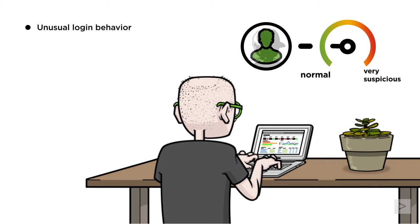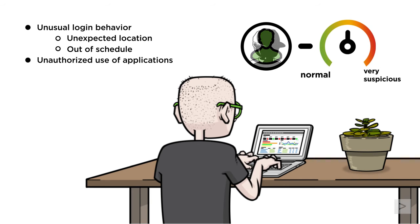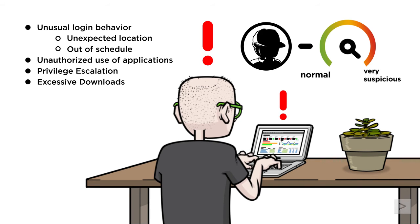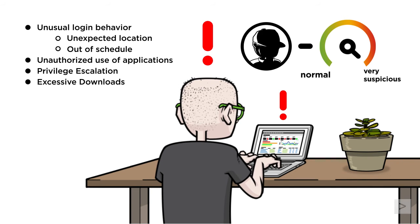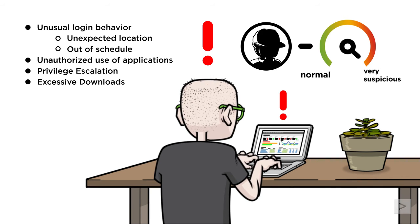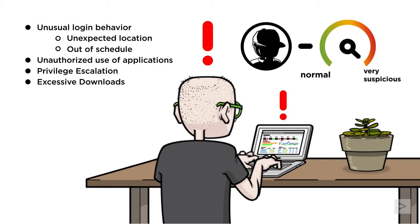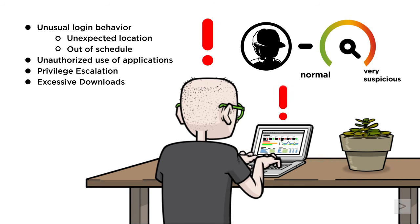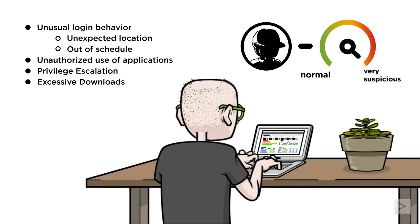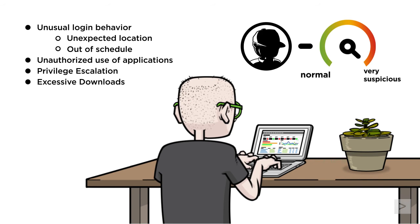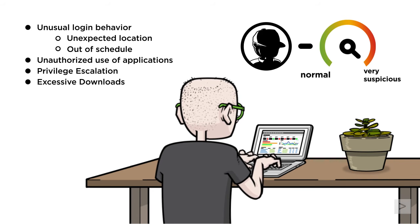For example, an individual user starting a session from an unexpected location may just be someone working remotely. A user account trying to use an application not relevant to their profile, or trying to access a folder with critical private data way beyond their scope, could be suspicious — but it could also be an honest mistake. If this account starts to download multiple files to a removable drive or to a personal computer, well, individually each of these actions may be normal, a special situation, or a mistake. But when we add them together, they should definitely raise alarms. A security analyst handling hundreds of events may not make this connection right away, but well-configured security tools can definitely help bring situations like this one to the surface.